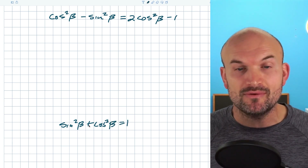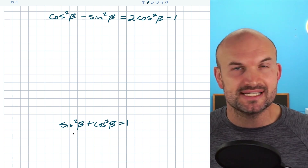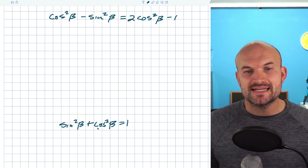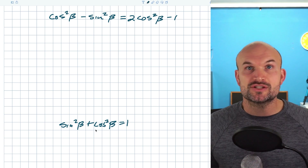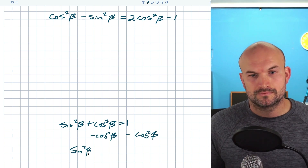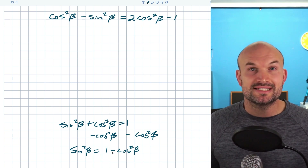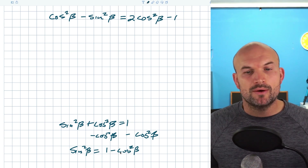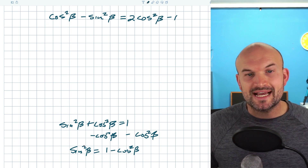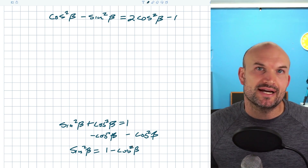I do not have my sine or cosine isolated at all. What I can do, like in the last example, is subtract cosine squared of beta on both sides and solve for sine squared. So now sine squared of beta is equal to 1 minus cosine squared of beta.